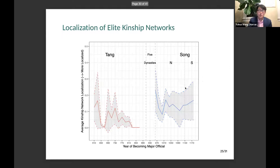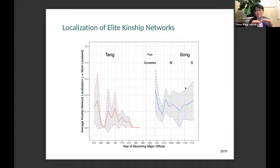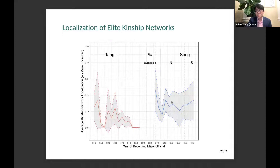I can calculate the average localization score of the kinship network among all major officials from the Tang era to the Song era. In the Tang era, they have a very low localization score — kinship networks tend to be spread out from different places. But this average localization score almost doubled in the Song era, meaning during Song times the major officials tended to have much more localized kinship networks.